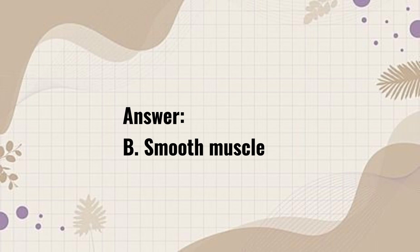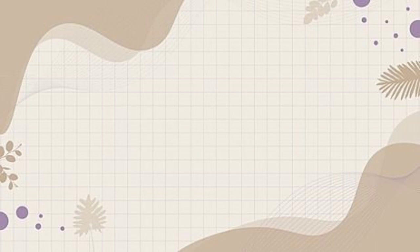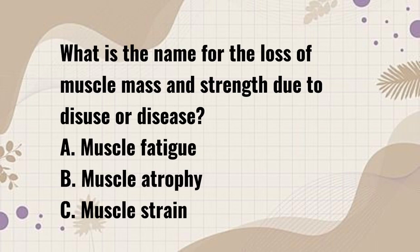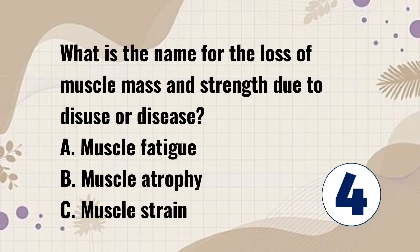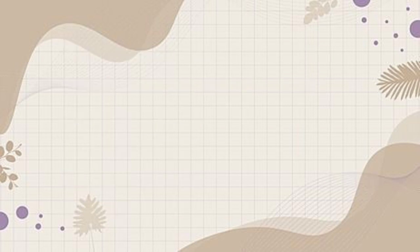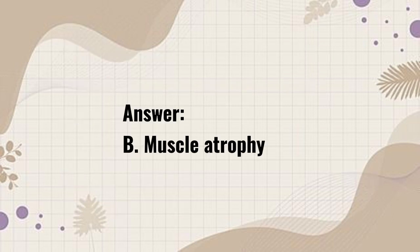What is the name for the loss of muscle mass and strength due to disease? A. Muscle fatigue. B. Muscle atrophy. C. Muscle strain. Answer: B. Muscle atrophy.